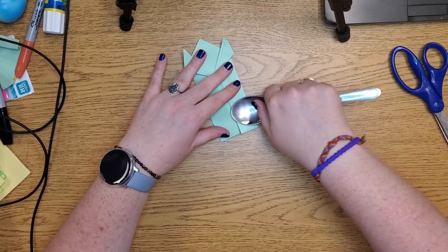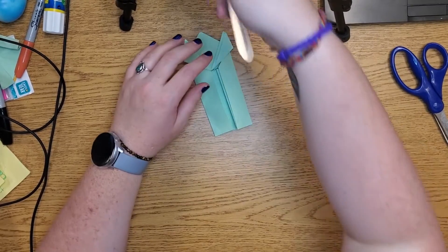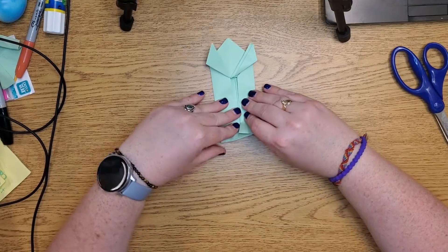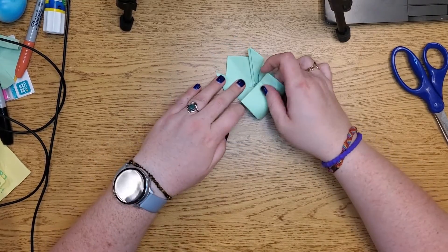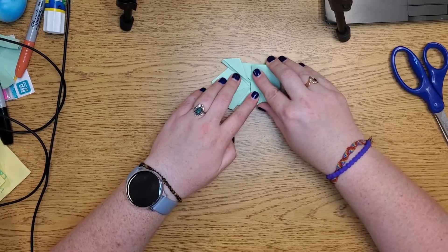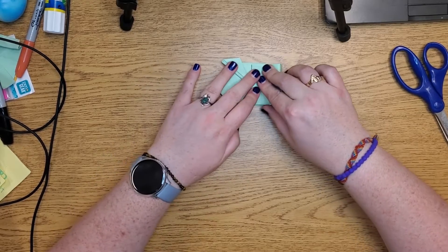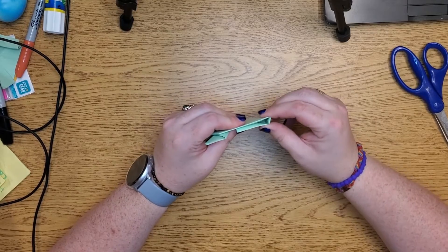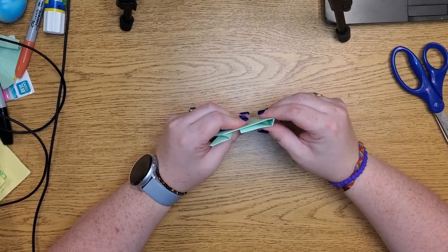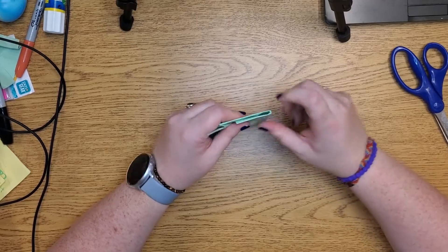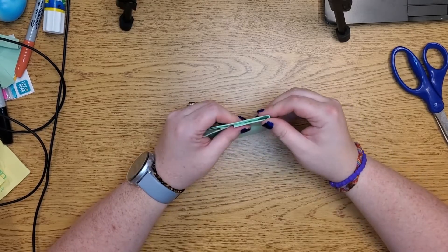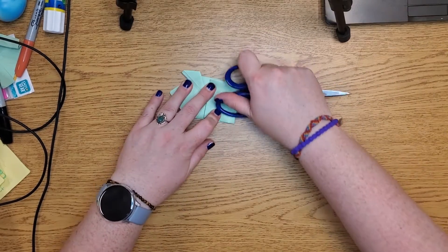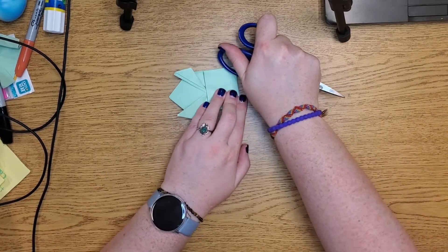All right, so then we fold this up to this point, so we fold it right to the edge of like this kind of diamond shape. Now as you notice this side's kind of not folding very well, so what you do is I always stick my finger in there and kind of pull on it a little bit and then it rounds out better, and then you squish it flat.